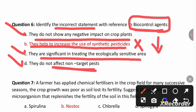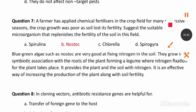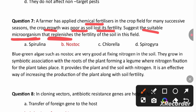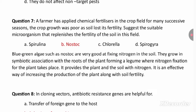A farmer has applied chemical fertilizer for many successive seasons and the crop growth was poor as the soil lost its fertility. The suitable microorganism to replenish soil fertility is Nostoc, because Nostoc is a blue-green algae that enhances the nitrogen-fixing capacity of the soil, thereby increasing soil fertility. So Nostoc is the right answer.